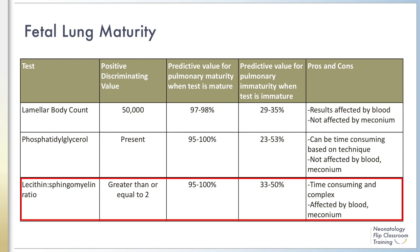The concentrations of lecithin and sphingomyelin in amniotic fluid are similar until 33 weeks of gestation. At 33 weeks, lecithin concentration begins to increase while sphingomyelin stays the same, and increased relative concentrations of lecithin are indicative of lung maturity. Performing the lecithin-to-sphingomyelin ratio test can be time consuming and complex, and its results are affected by both blood and meconium. Overall, these three tests have strong positive predictive value when the test deems fetal lungs mature, but the predictive value is significantly lower when the test demonstrates lung immaturity. Lamellar body counts and lecithin-sphingomyelin ratios are most often used in clinical practice.